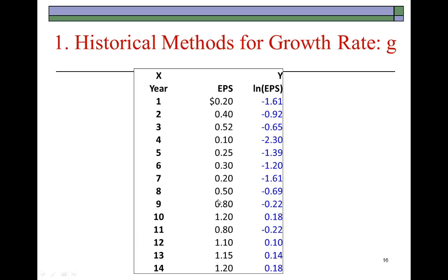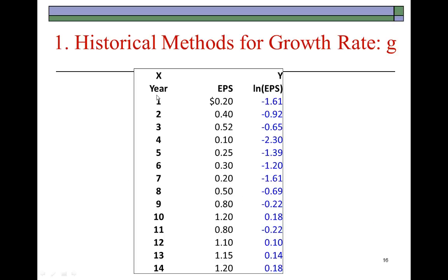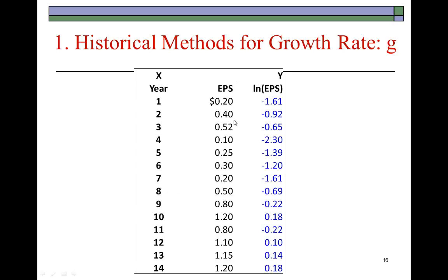Here's an example. Over the past 14 years, we generated these historical earnings per share data. With this data, we can estimate growth rates. The first would be the compound growth rate — we link the most recent earnings per share with the earliest earnings per share and find the rate at which it has grown, in this case over the past 13 years. This is the compound growth formula; you simply solve for G to find it to be 14.78%. EPS 14 is $1.20 and EPS 1, which is the earliest, is $0.20 per share. The average growth rate calls for you to find the year-to-year growth rates and then take their average.